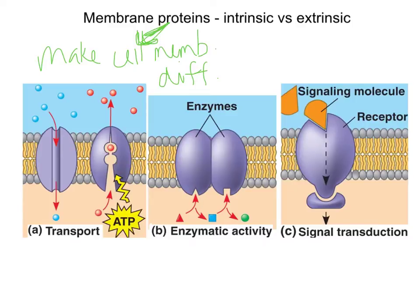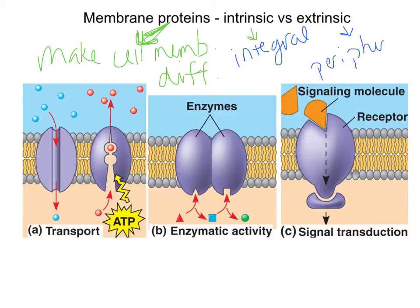We have two basic kinds of membrane proteins. Intrinsic or integral membrane proteins are embedded in the membrane — they usually span the entire width. Extrinsic proteins, also called peripheral membrane proteins, stay on the edges and are on the surface of the membrane.